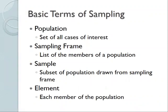Some basic terms of sampling: First is the population — the set of all cases of interest, or who you want to generalize to. The sampling frame is a list of members of a population. For example, if I want to study how many hours of coursework every person in the class is taking, my population would be our class, and the course roster would work well as a sampling frame.